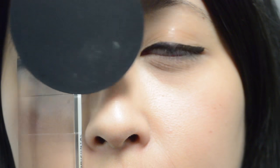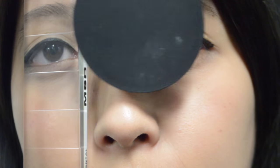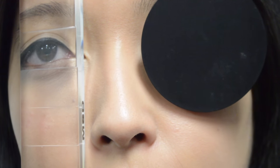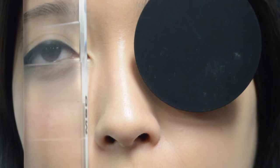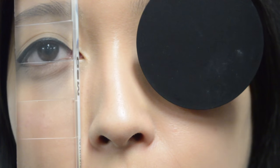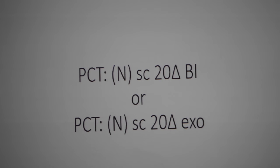Here is the null point at 20 diopters. Going past the null point, we will see a reversal in eye movement, and that will confirm the correct prism strength. From our PCT, we have now determined the size of the deviation, which is 20 diopters base in.